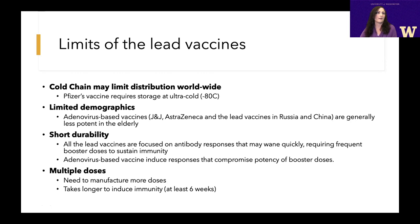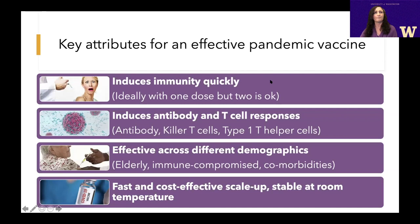Another potential issue is we don't know how durable the immunity induced by these vaccines will be. Ideally, we need vaccines that provide immunity for at least a year. Most of these vaccines require multiple doses — at least a prime and a booster immunization — meaning it takes six to eight weeks from the first dose before you have immunity. For an effective pandemic vaccine, we want one that induces immunity quickly, ideally in one dose. We also want it to induce not just antibody responses but T cell responses, be effective across demographics including the elderly, and be fast and cost-effective to scale up and stable at room temperature.